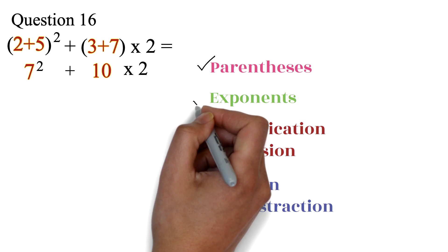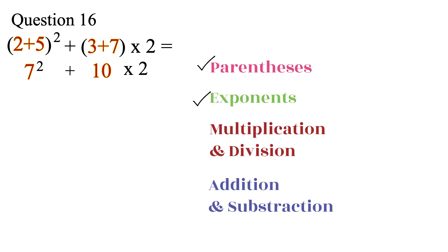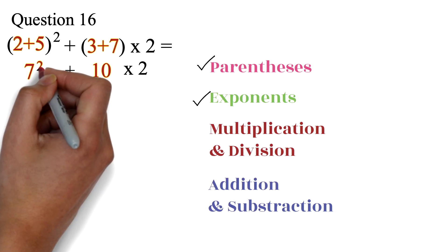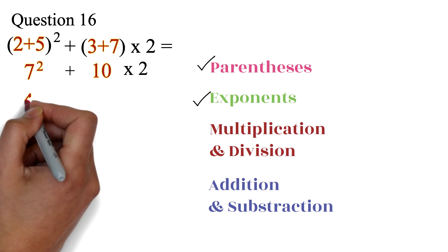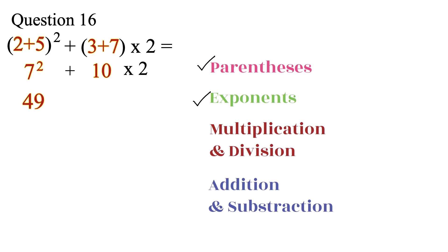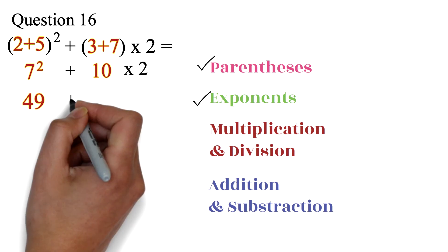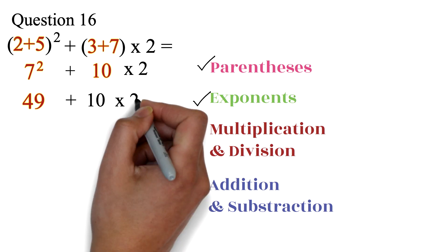From the order of operations, we have to do the exponent next. So we have 7 squared, which is 49. We have 49 plus 10, times 2.